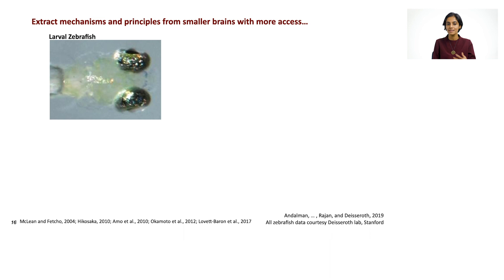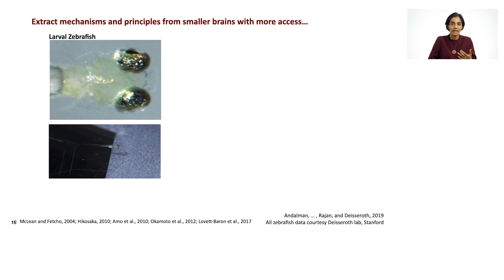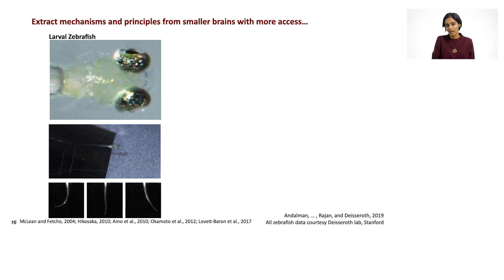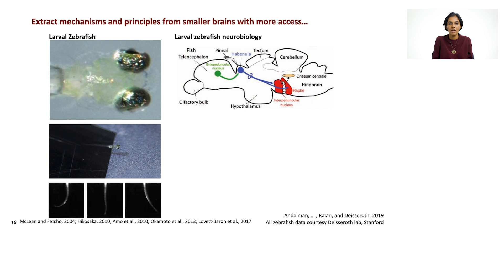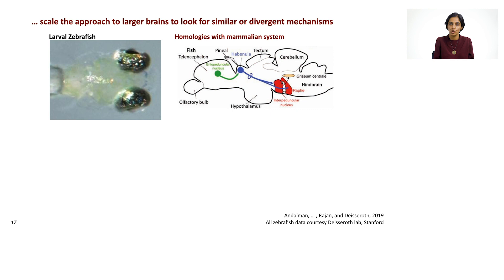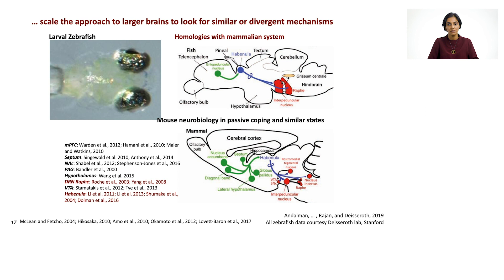One of the things we want to do is to extract mechanisms and principles from smaller brains with more access. The larval zebrafish system is perfect because we can see right through it, and experimental colleagues can monitor essentially every unit in the awake behaving larval zebrafish. We want to get something about mechanisms or principles from these nervous systems and then scale the same approach to larger brains where we have less access. Larval zebrafish are also interesting because they have interesting homologies with the mammalian system, particularly in the mouse, where the neurobiology of active coping and passive coping has been studied extensively.